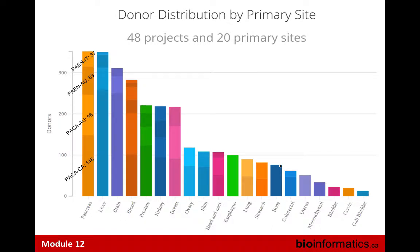The slide gives you a sense of the different number of donors at each primary site. Pancreas, for example, came from four projects — some are adenocarcinoma, some are neuroendocrine tumors. This distribution shows what data is available in case there is a specific disease you're interested in.